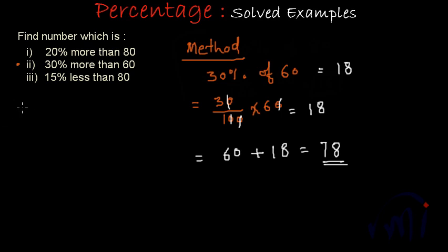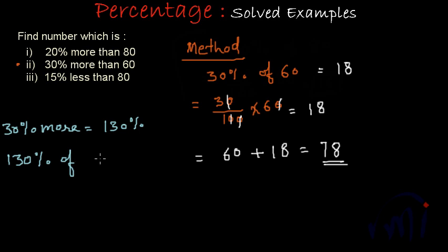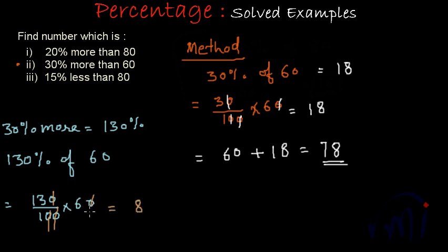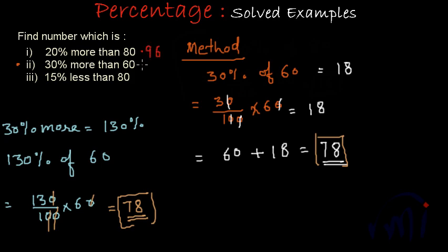Using the shortcut: 30% more is equal to 130%. So we find 130% of 60, which is 130/100 multiplied by 60. The zeros cancel, giving 13 multiplied by 6 — that is 78. We are getting the same result, 78, using both methods. The first problem gave 96 and the second gives 78, and we have a third problem to go.